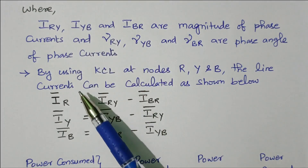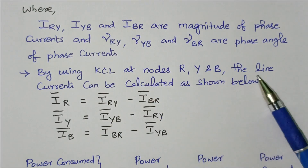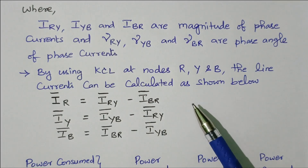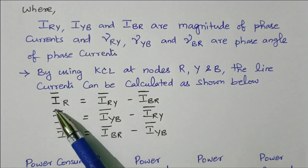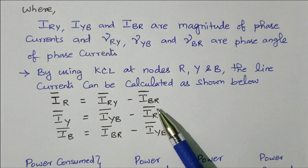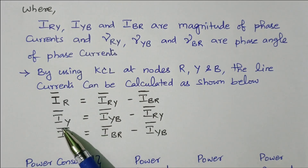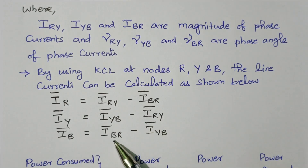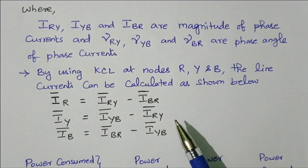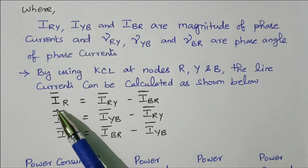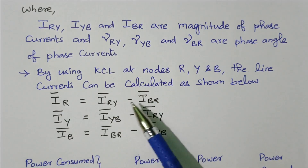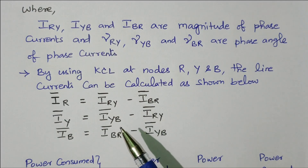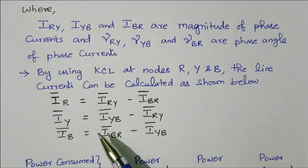We can calculate the line currents by using KCL at nodes R, Y, and B. The line current is the vector difference of phase currents: I-R = I-R-Y − I-B-R; I-Y = I-Y-B − I-R-Y; I-B = I-B-R − I-Y-B. From the diagram it is clear that current is split, so line current equals the vector difference of two phase currents. We have now calculated the phase voltage, then the phase current, and from that the line current.